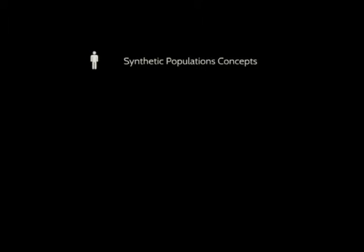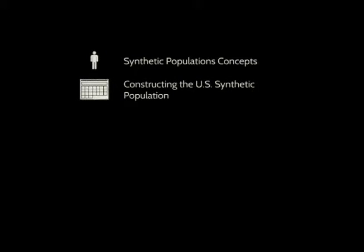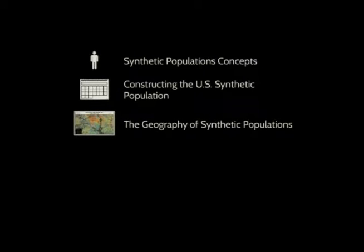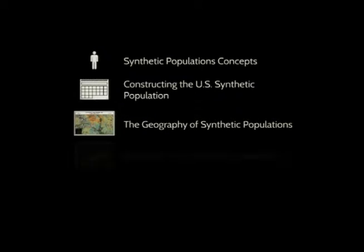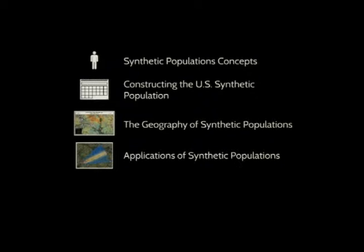First, the concepts: what are they, where do we get them, why and how do we create them? Some of the geographical aspects — as a geographer, I want to know where these synthetic households are. Other people who deal with synthetic populations create them in a way that is non-spatial, just lists and tables. But as a geographer, I want to know where these synthetic households are. That's one of the keys we look at.